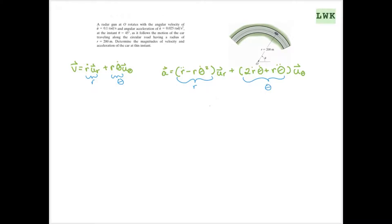We can start by looking at our problem. Since r is constant at 200 meters, ṙ and r̈ both equal zero, because taking the derivative of a constant gives you zero.